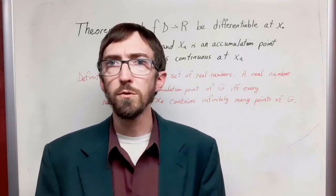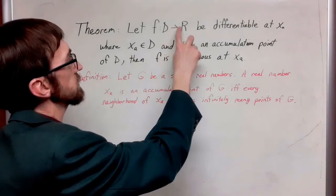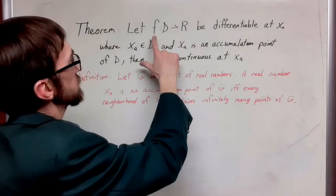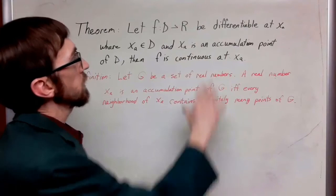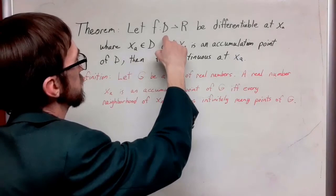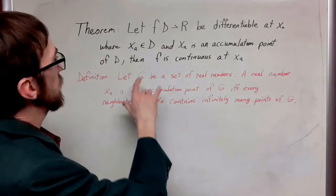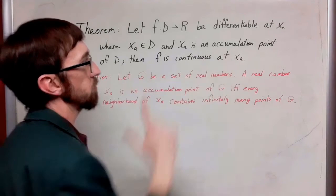I have the statement here. We're going to establish that our function f associates some domain d to some range r. We are going to say that f is differentiable at the point x sub a, where x sub a is an element in our domain and further an accumulation point of our domain. This is going to imply that f is continuous at the point x sub a.